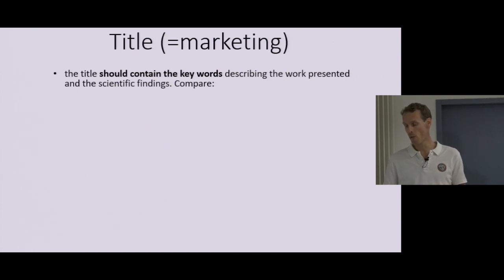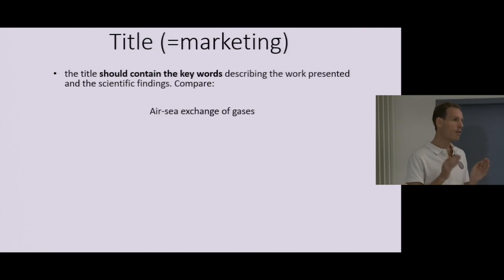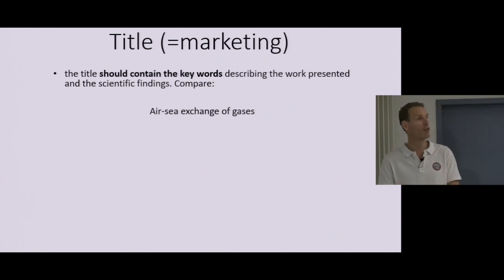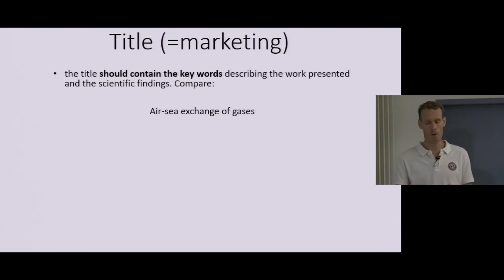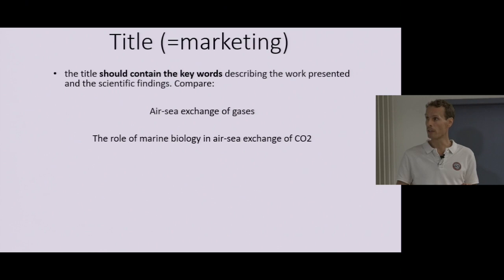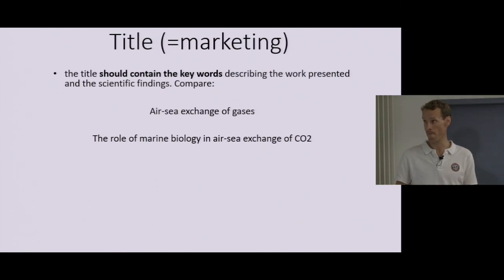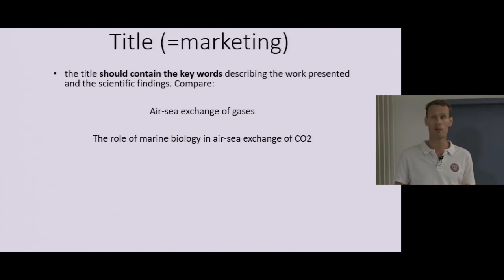The title should contain keywords describing your work presented. Let's compare a few titles. Very short: 'Air-Sea Exchange of Gases.' That's pretty clear, but if you're looking for a specific topic in Web of Science, is that a paper you're going to click on? Really, you're looking for a little bit more information. How about: 'The Role of Marine Biology in Air-Sea Exchange of CO2'? Now we've added keywords — CO2, marine biology — and there's a lot more information already.